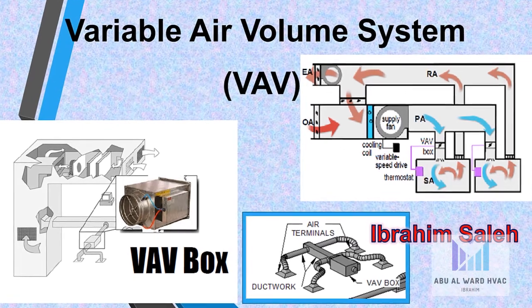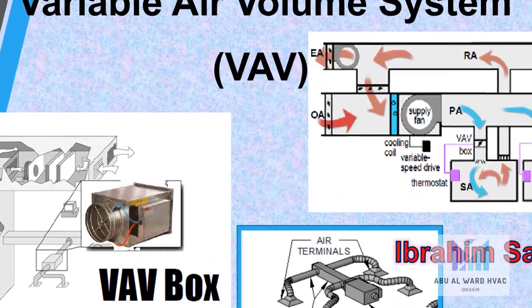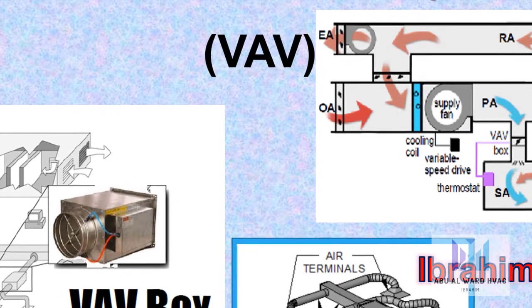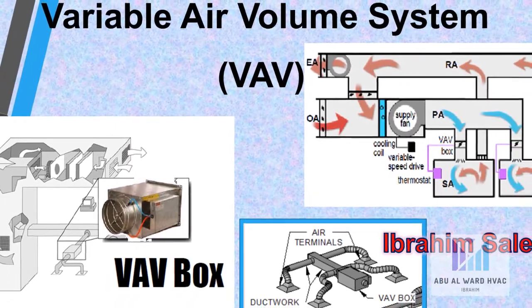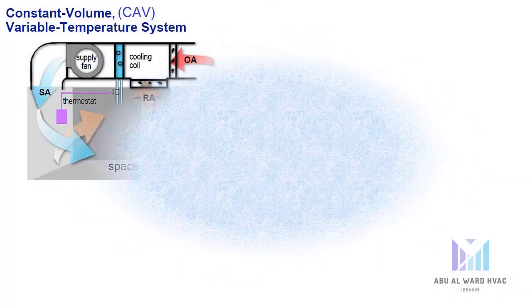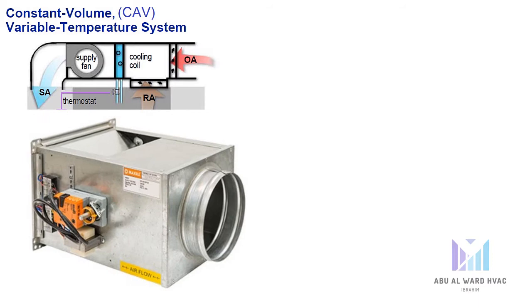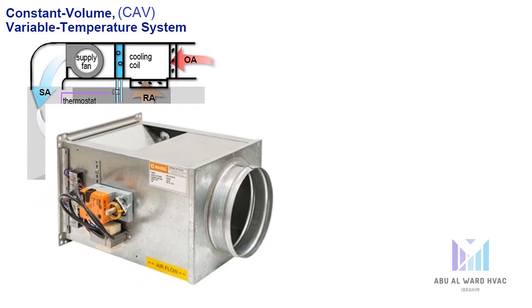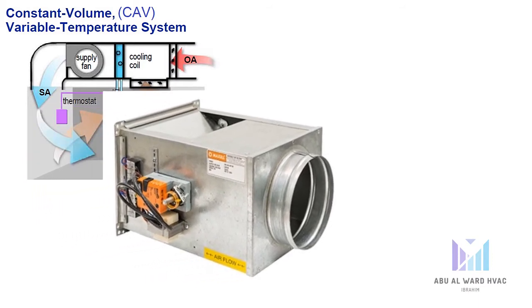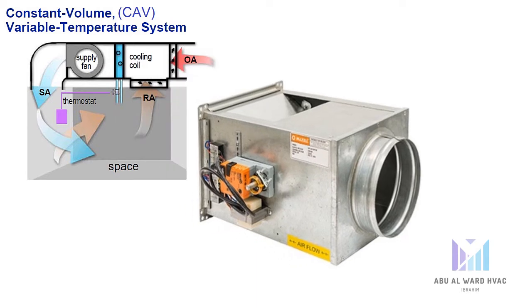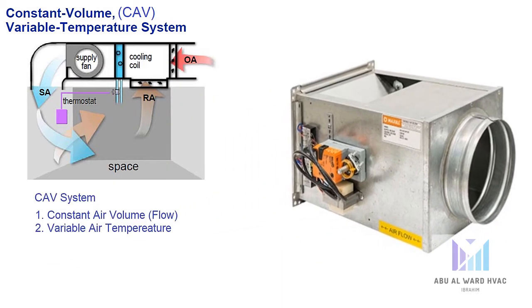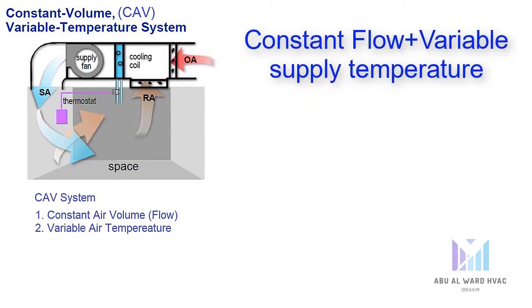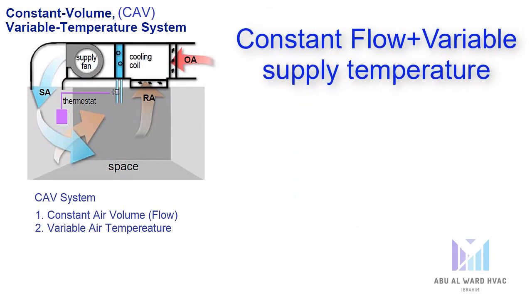Hello everyone, today we are going to talk about variable air volume systems and we will have a comparison between this system and constant air volume system. First of all, constant air volume (CAV) varies the temperature of the system while keeping the air volume constant. A CAV system has constant air volume flow and variable air temperature.